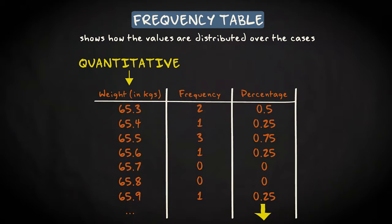The frequency table would show, for instance, that two persons have a weight of 65.3 kg, one person a weight of 65.4 kg, etc. That doesn't give a good overview, because it barely tells you more than the original data matrix.